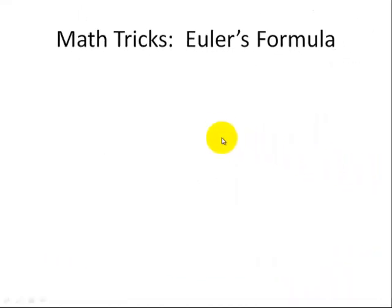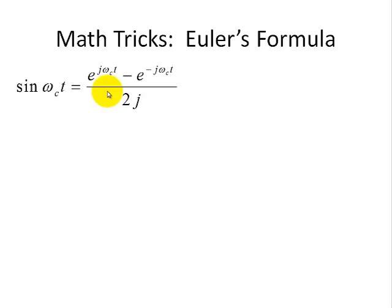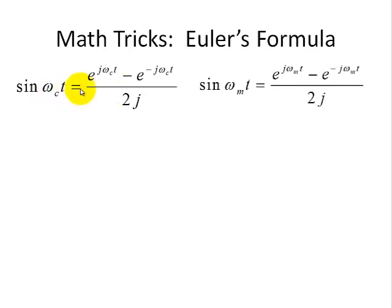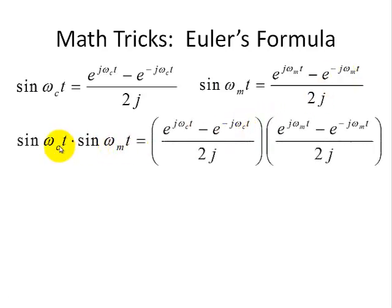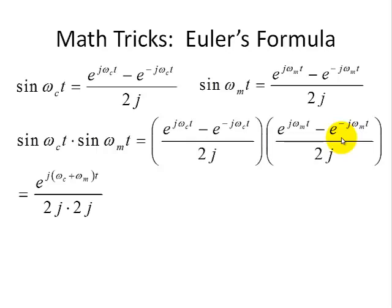For one last example using Euler's formula, we multiply two sine functions — sine(omega_c * t) for the carrier and sine(omega_m * t) for the message — substituting both Euler definitions and following the same process, adding exponents for each term. This time the denominator is 2j times 2j.